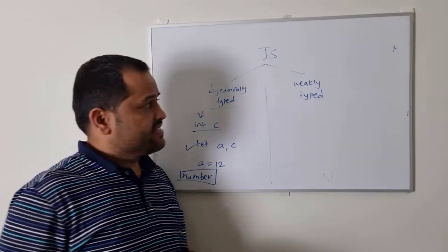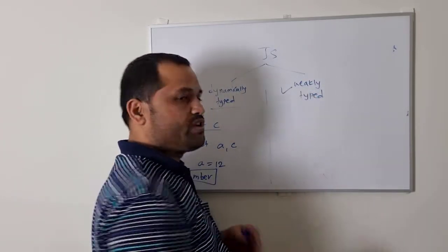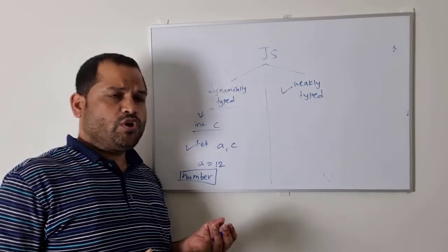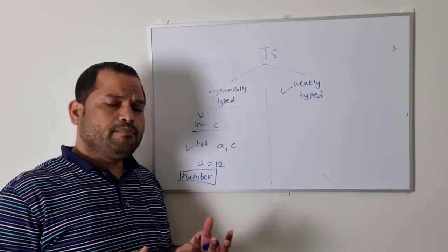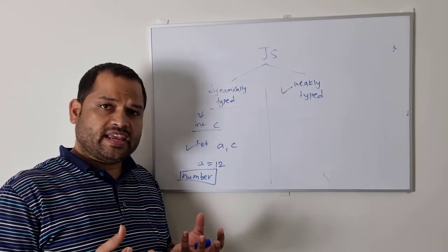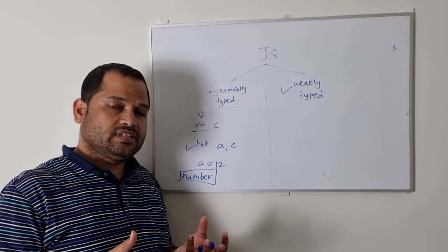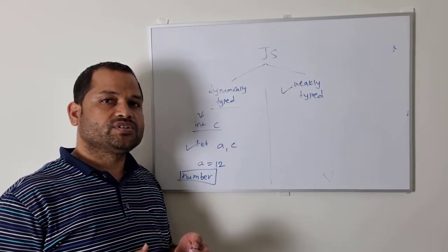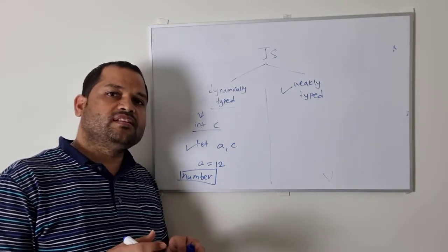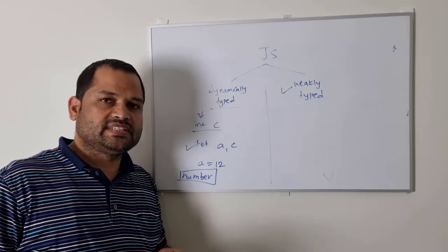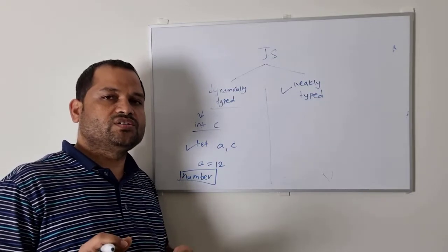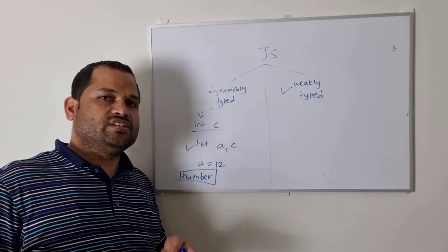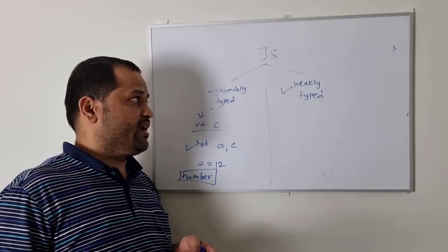Now let us understand the term weakly typed language — what it means. Weakly typed language means that if you want to add a number with a string, can that happen? Yes, it can happen in JavaScript, and that's why it is called a weakly typed language. But this is not possible in strongly typed languages like C, C++, or Java, where you can't just do `1 +` a string — it will throw an error.